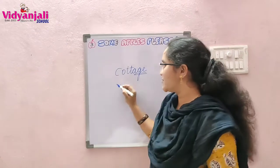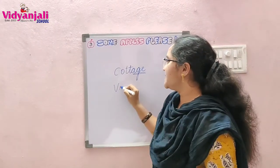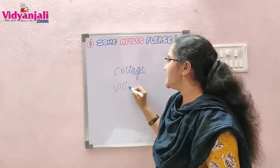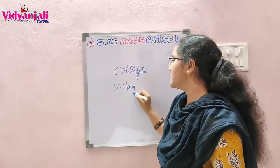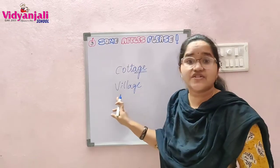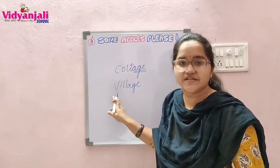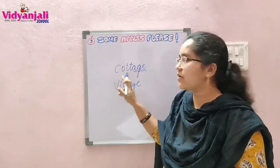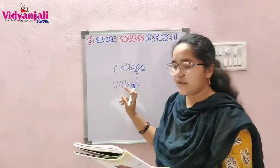The word which ends with A-G-E must be pronounced as E-G-E. Cottage. What is this? It's not 'villAge', it's 'village'. Cottage. Village. So, who lived in a little cottage in a village?